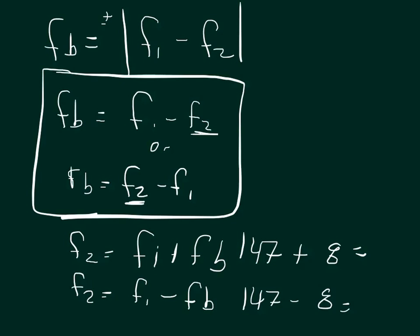and that's the two possible frequencies that train 2 can have in order to create 8 beats per second. So it could be 155 hertz, or it could be 139 hertz.